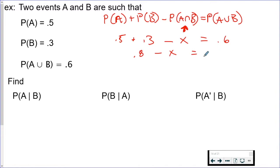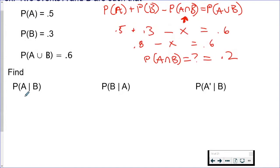So if I have 0.8 here minus X equals 0.6, what does the probability of A intersect B equal? Yes, 0.2. Now we can actually answer these.